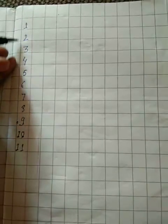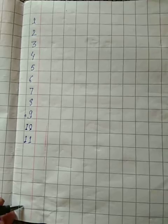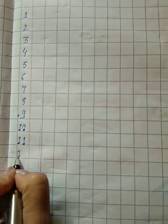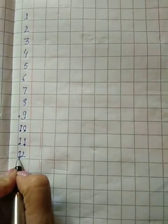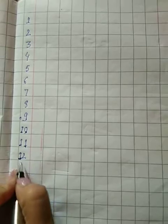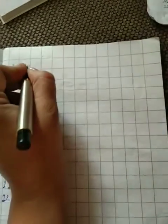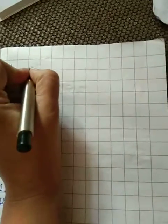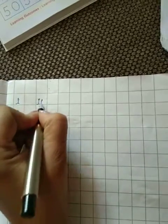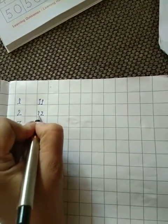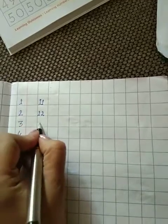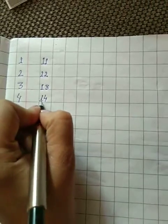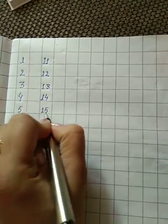So here we go, 1, 1, 1, 1, 1. 1, 1, 11. 11 ke baad, 1, 2, 12. Then 1, 3, 13. 1, 4, 14. 1, 5, 15.